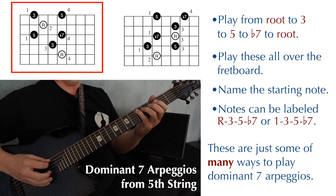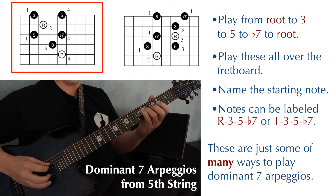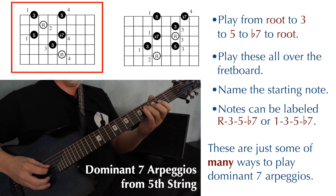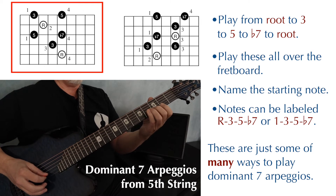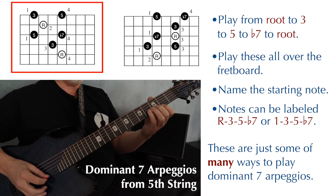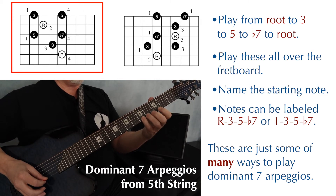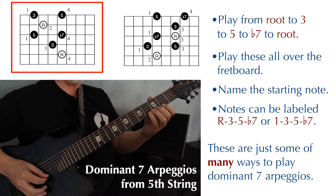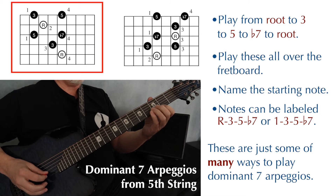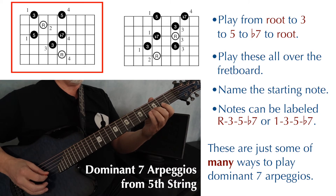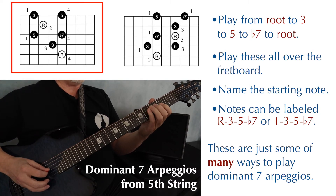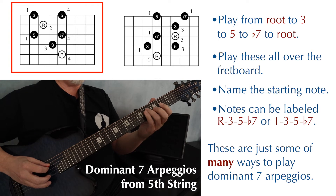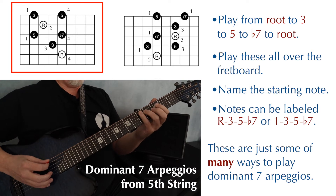By function, that would be root, three, five, flat seven, root, three, five, back to three, root, flat seven, five, three, and root.